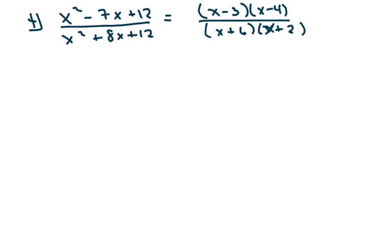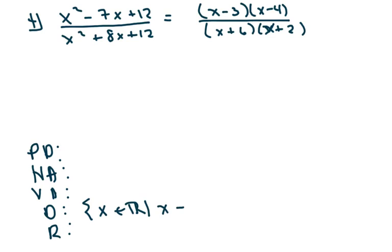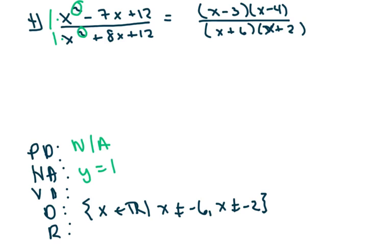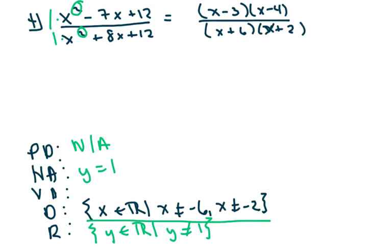Next one. I factored it — we have horizontal, vertical, domain, and range. The domain: x cannot be negative six and x cannot be negative two. We don't have a point of discontinuity, so I'll put N/A for not applicable. The degrees are the same, so I divide the lead coefficients — that's y equals one. That means the range is all real numbers but y cannot be one. The vertical asymptote is x equals negative six and x equals negative two.